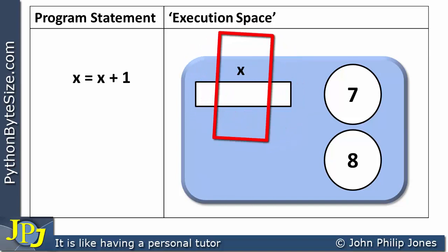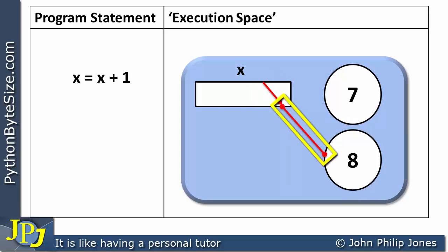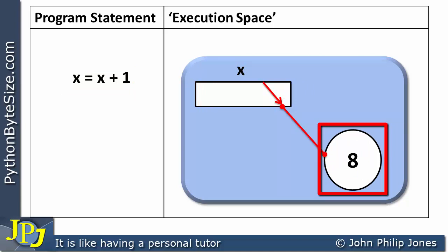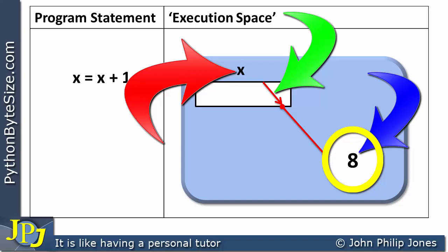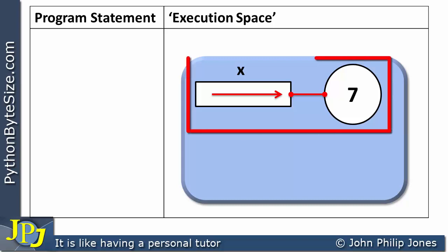Python will now bind x to the integer object that contains the value eight — so the arrow ends up pointing to it, and this is the id of where this new object is in the computer's memory. What happens to the seven? In this program, the seven no longer has anything pointing to it, so Python will come along at some future moment and remove it — it will be garbage collected. After the execution of this statement, the arrangement we have is: the name, the id, the object with its type based on the integer class, and the value — name, id, value, and type.